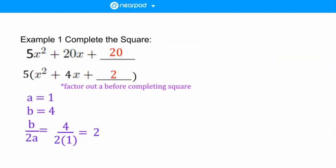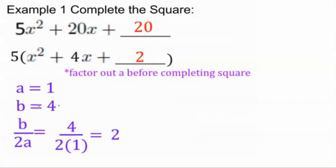Let's look at Example 1: complete the square. We're given the expression 5x² + 20x + something. To find that something, we first want to factor out before we complete the square. These are both divisible by 5, so we divide out 5. Then identify a and b: a is 1 because we have 1x², b is 4. b over 2a is 4 over 2 times 1, that's 2.